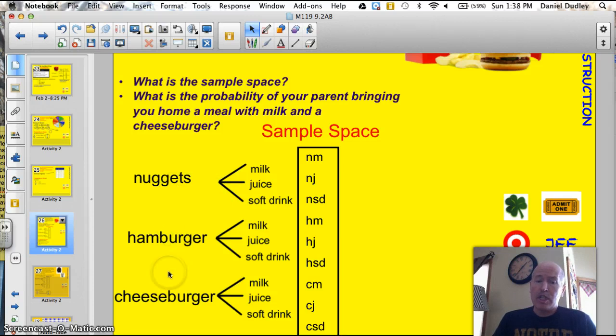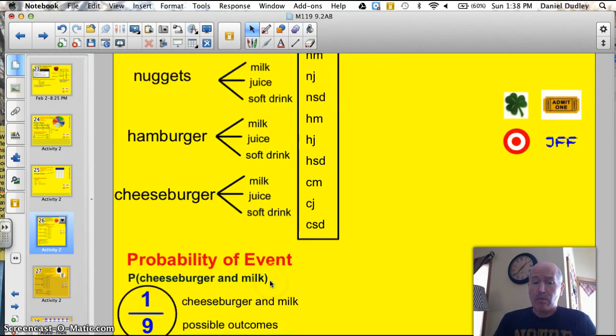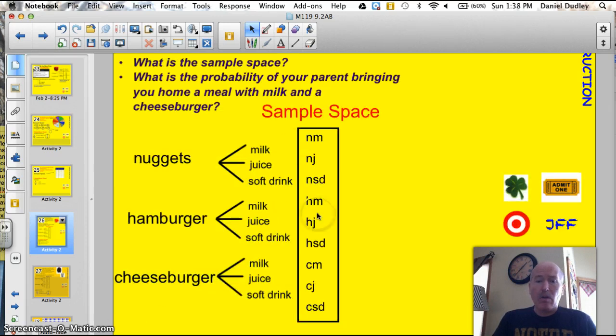So, I listed out nuggets, hamburger, and cheeseburger and then made a tree diagram. You could have it with milk, juice, or soft drink. You could have the hamburger with milk, juice, or soft drink. And the cheeseburger with milk, juice, or soft drink. And for my sample space, I just abbreviated these so I had a nice and neat list. Nuggets and milk. Nuggets and juice. Nuggets and soft drink. So, you can see that I had a total of 1, 2, 3, 4, 5, 6, 7, 8, 9. You can see them here groups of 3 easier. So, I had a probability of 9 events but only one of them included a cheeseburger and milk. Here's my cheeseburger and milk. So, the probability of that event is 1 out of 9.